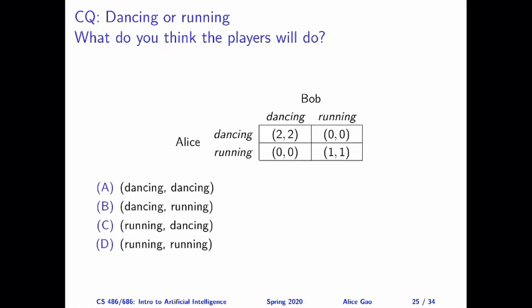Based on historical data, this is what I would predict: the distribution we get will be a bimodal distribution. Most of you would say that Alice and Bob would both choose to go dancing, and a significant fraction of you would say that they would both go running. And both of you will be correct — these are two plausible outcomes of this game. In some sense, these are the two stable outcomes of this game.